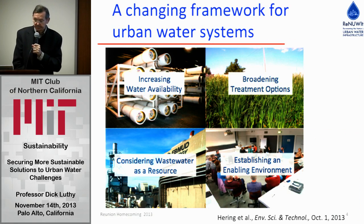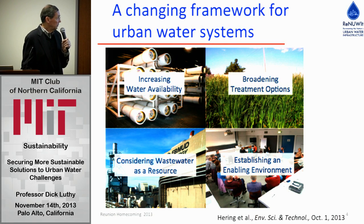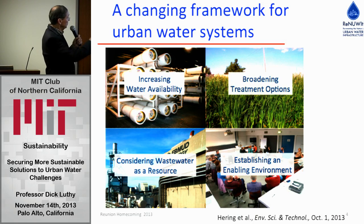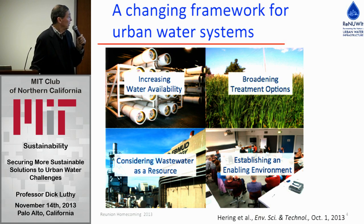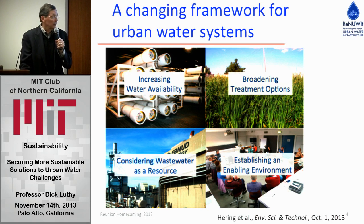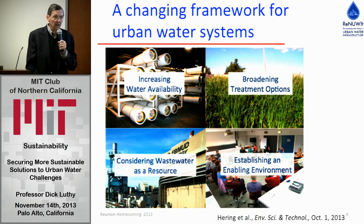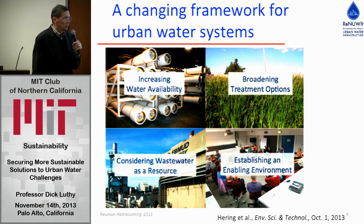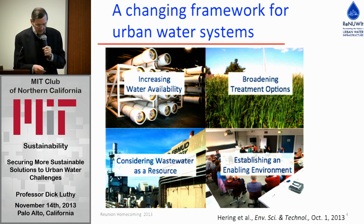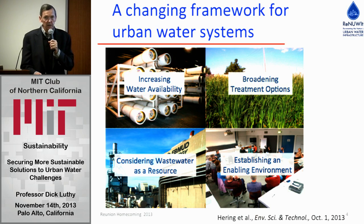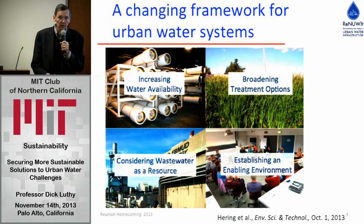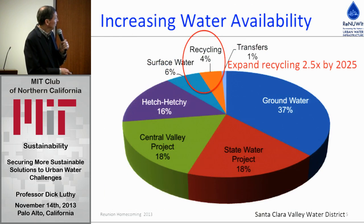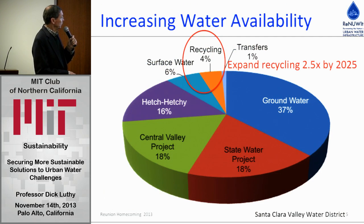A changing framework for doing things differently in the future involves four themes: increasing water availability through new treatment options and water recycling; broadening treatment options by thinking about natural systems; considering wastewater as a resource and not a problem; and addressing the political science issues involved in affecting change. Tonight I'll touch on each of these themes. Here's the water supply pie chart for Santa Clara Valley Water District, and the interesting thing is it really is a pie chart.